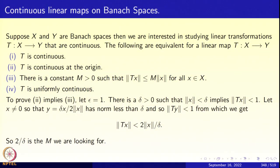The theorem gives you four equivalent conditions. Condition 1: T is continuous. Condition 2: T is continuous at the origin. Condition 3: there exists a constant m bigger than 0 such that norm Tx is less than or equal to m times norm X for all X in X. And condition 4: T is uniformly continuous.